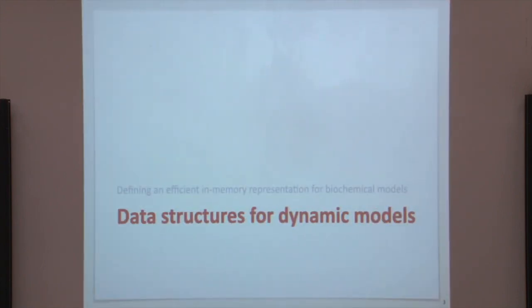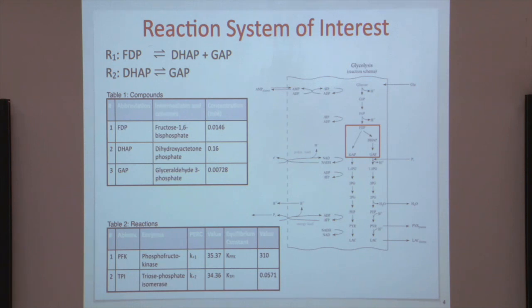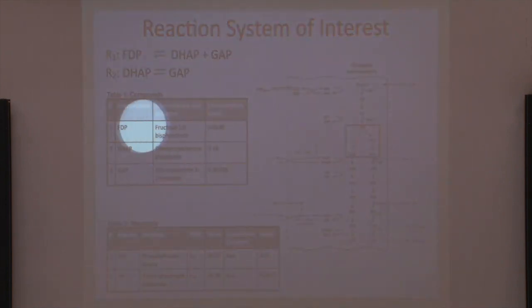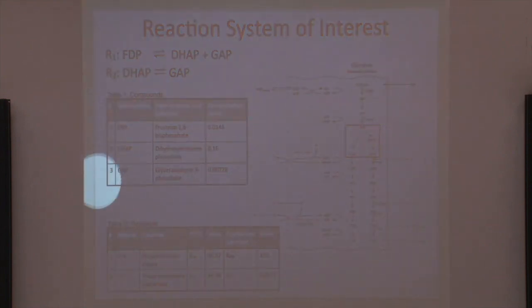How can we efficiently represent a biological system in data structures for dynamic simulation? Here we have a more complex pathway, glycolysis. Two reaction channels convert fructose 1,6-bisphosphate into dihydroxyacetone phosphate and glyceraldehyde 3-phosphate. A second reaction channel converts dihydroxyacetone phosphate into glyceraldehyde 3-phosphate. So we have three metabolites and two reactions in that system.